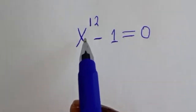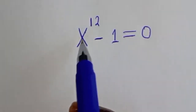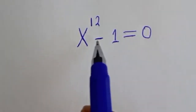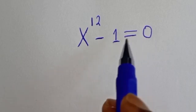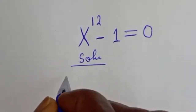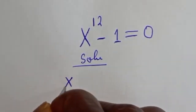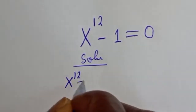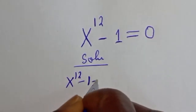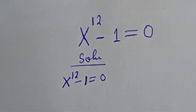Hello. How to solve for s from this given equation: s raised to power 12 minus 1 is equal to 0. We have the given equation, s raised to power 12 minus 1 is equal to 0.